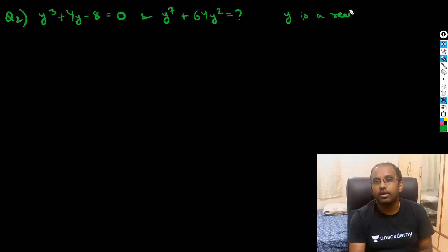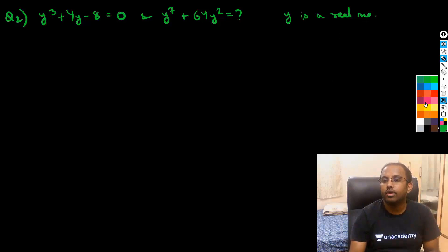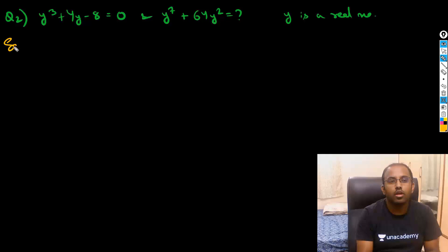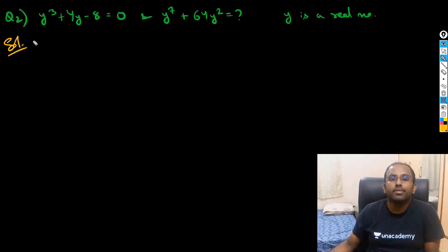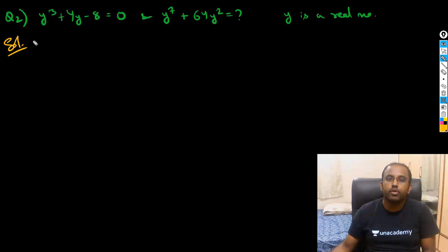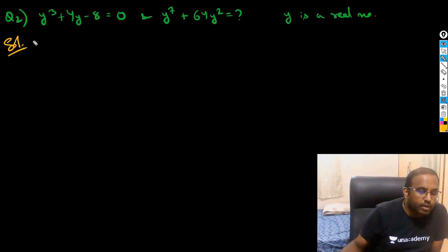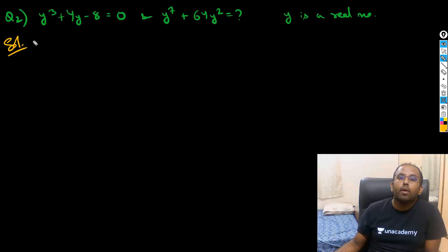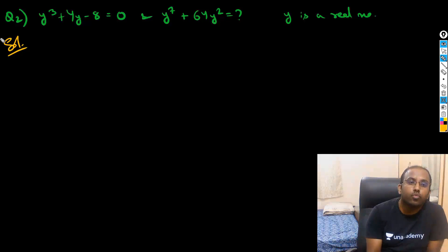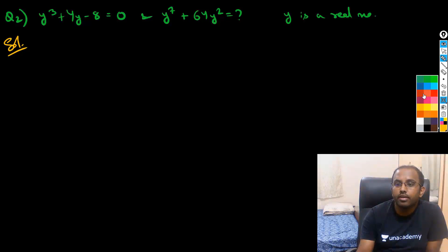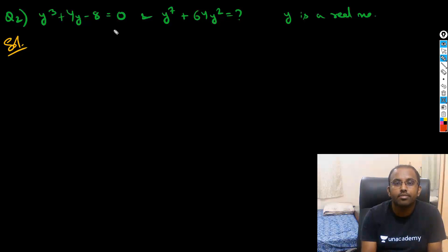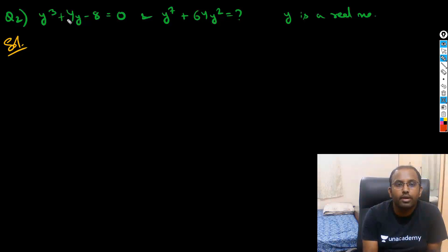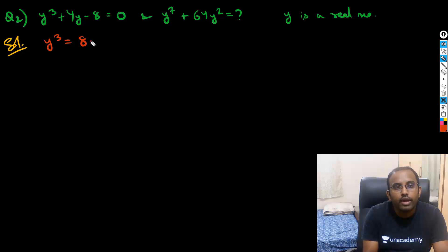So y is a real number. Let's look at this question: y³ + 4y - 8 = 0, and y⁷ + 64y² is what I need to calculate. I need to reduce the power because it is y raised to 7, and I can't directly connect it from y³. So how to reduce this power? From y³ + 4y - 8 = 0, we can get y³ = 8 - 4y.